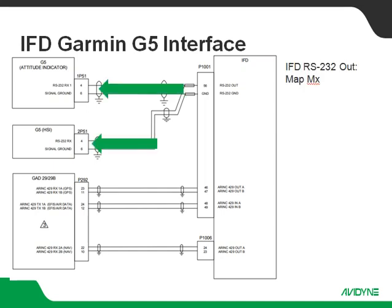First and foremost, we've got an RS-232 output from the IFD that's going to be in MAP MX format. That line does get paralleled to both your attitude indicator and the HSI, assuming you have dual G5s of course.